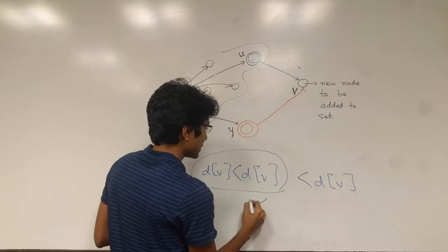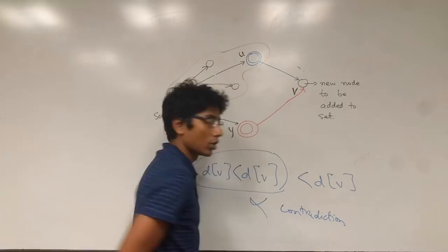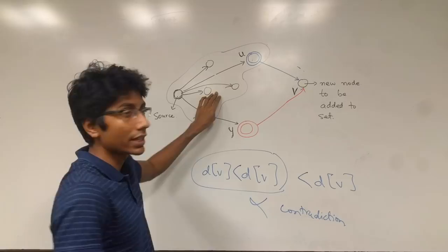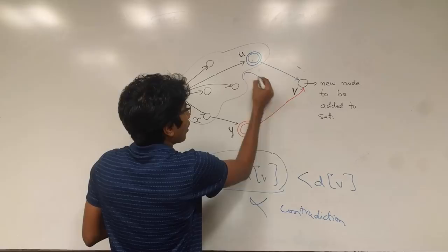So we have proved that whenever you are adding a new node to the city, to the visited city's set, you already have found out the minimum distance to that node from the source. So d of v is optimal for all v.